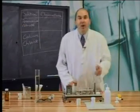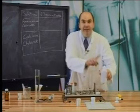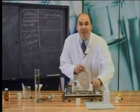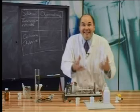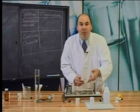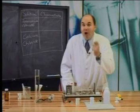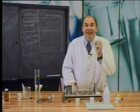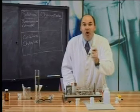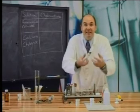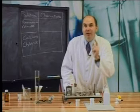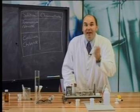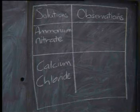Hi there. For this experiment, all we'll need is some water, some calcium chloride and some ammonium nitrate. We'll add these to test tubes containing water to see if they really get hot and cold, just like the instant hot packs and cold packs do when the seal inside them is broken. But before we do some experiments, make sure that we've got a table ready to record our observations. Here's mine. Compare it to yours.